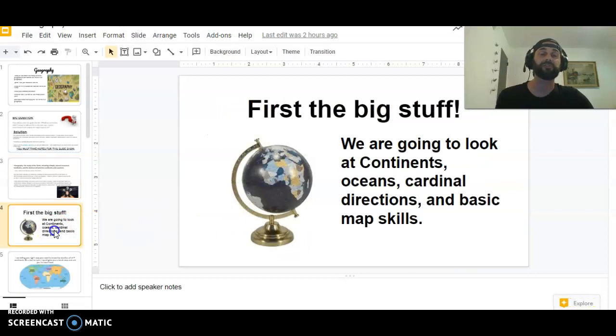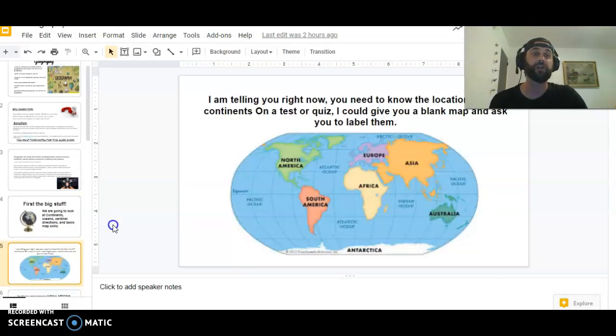First we got to get the big stuff. This should be review but you need to know the continents: North America, South America, Africa, Europe, Asia, and Australia. And we have Antarctica here. A lot of the times I leave Antarctica out because there is no permanent civilization there. It is huge, however there's only about 50 people there at any given time, so really there are no permanent civilizations there.